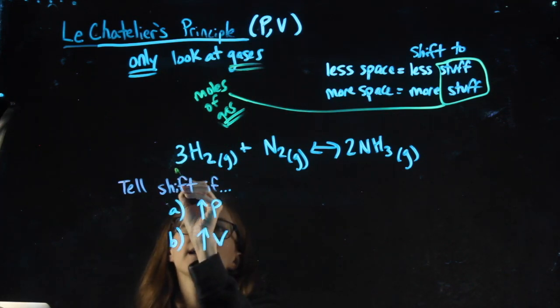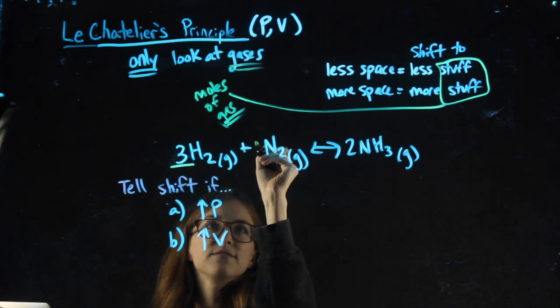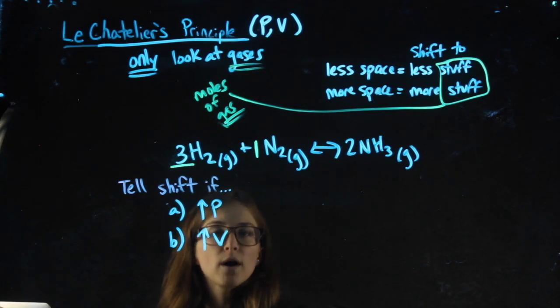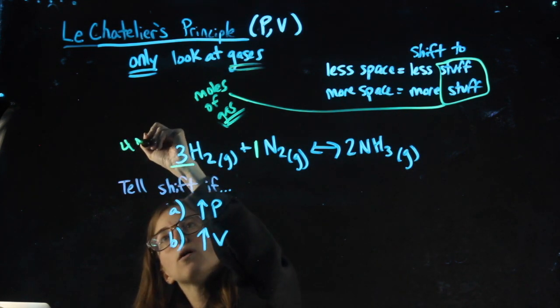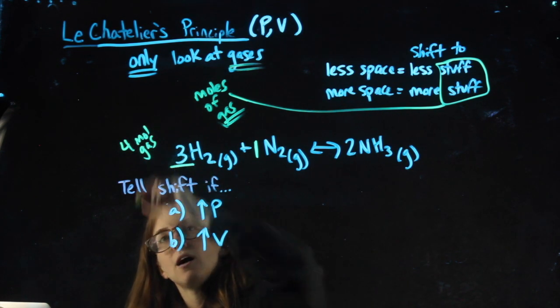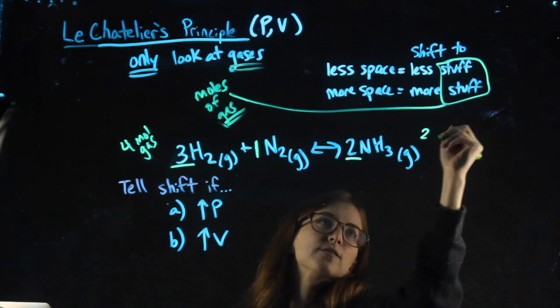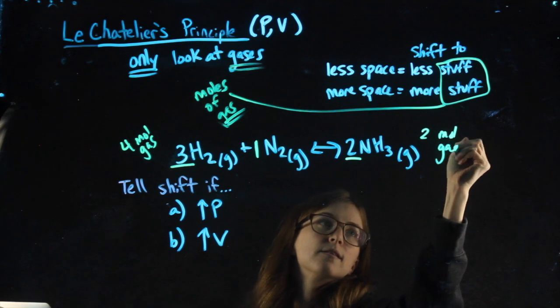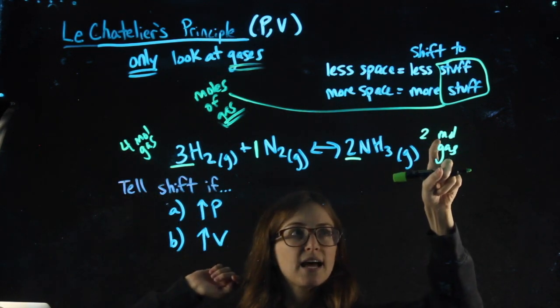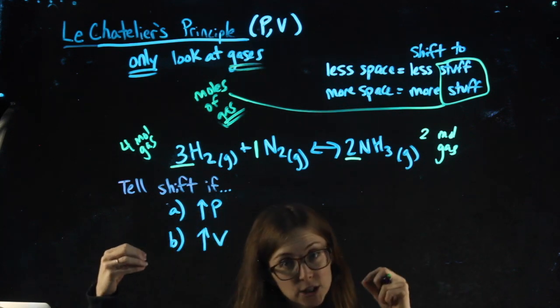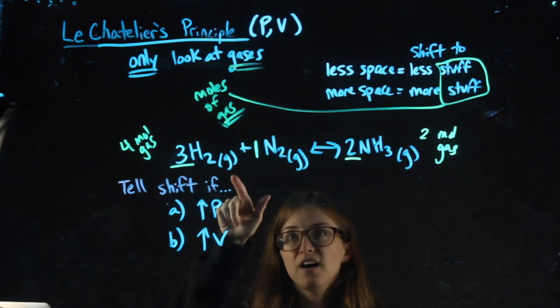On the left side, I have three moles of that gas. And it's an invisible one here. One mole of that gas. So for this reaction, I have four moles of gas on the left side. On the right side, I just have two moles of gas. That's my stuff. This is the more stuff side. This is the less stuff side for this reaction. We always figure it out from the coefficients of the gases only.